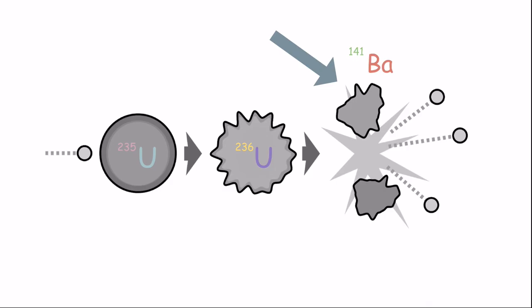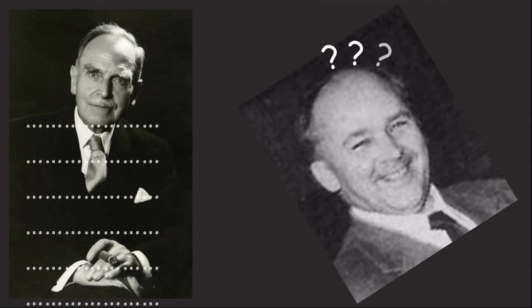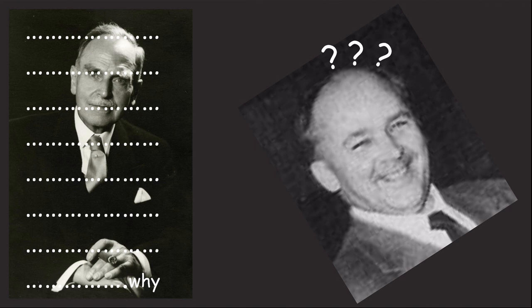Hahn and Strassmann found what they thought to be barium among the decay products of uranium. However, they weren't able to fully explain why this was. Suspecting that the experiment was flawed, they turned to Meitner in hopes of an explanation.